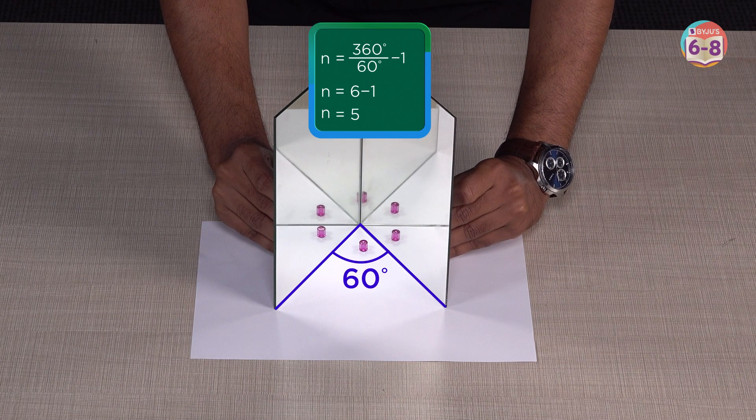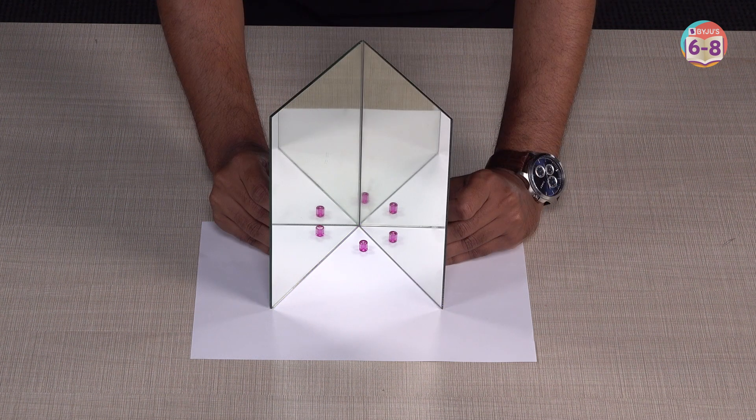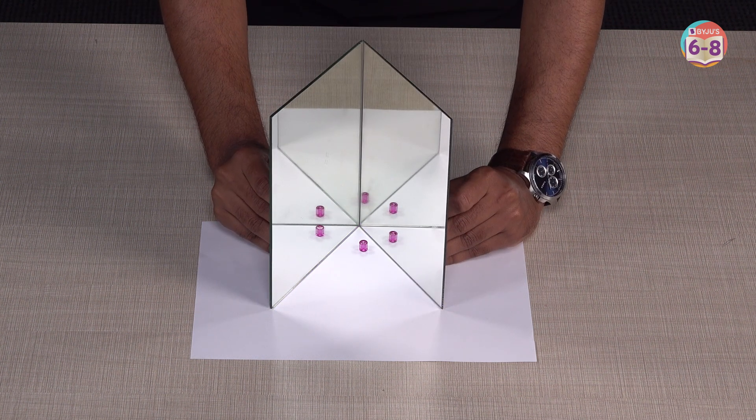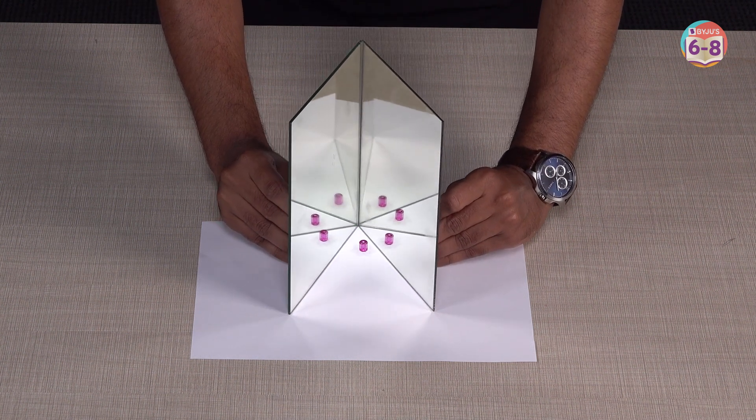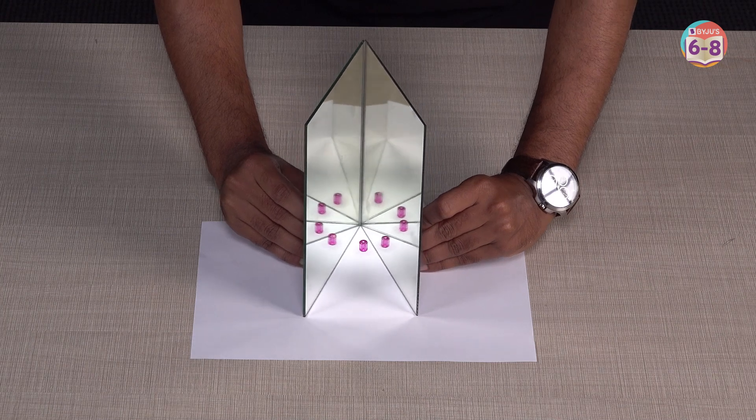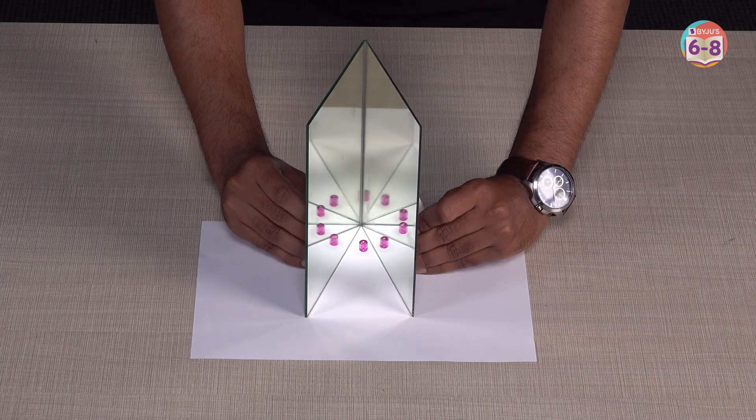Yes, the formula says the same thing and if you keep reducing this angle, you'll see more and more images, right? This is multiple reflection and this is multiple image formation.